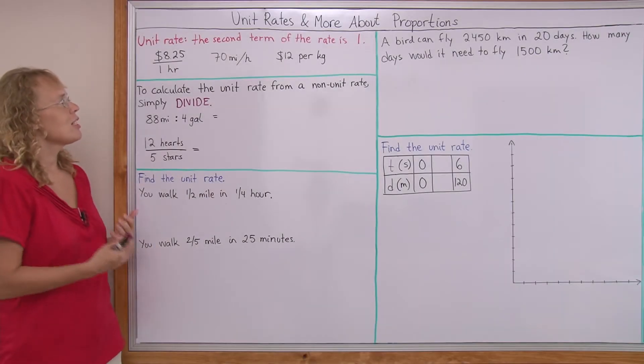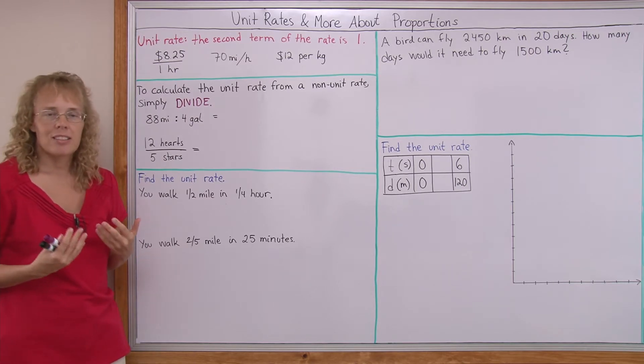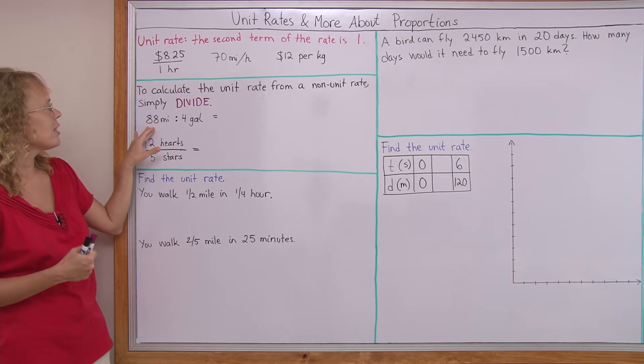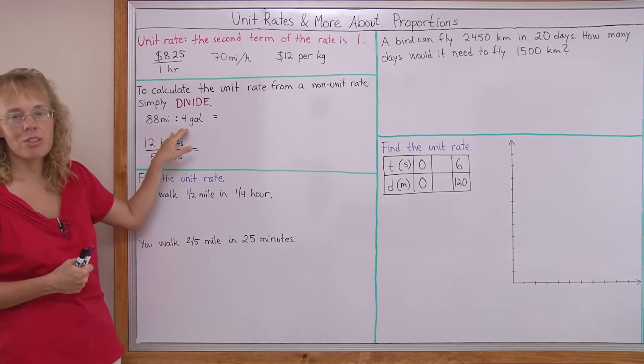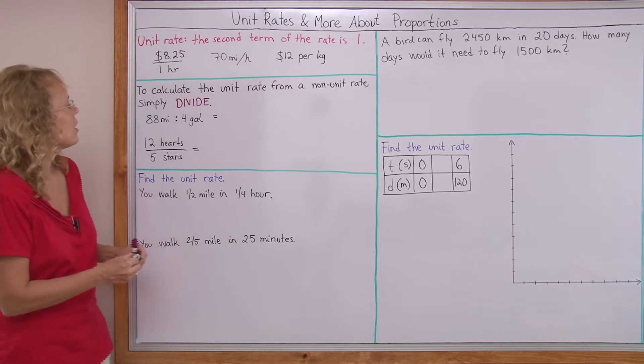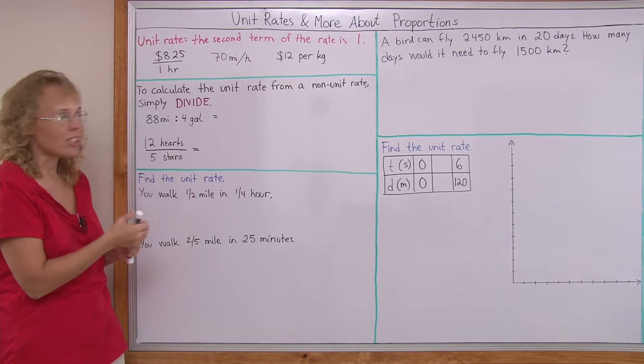Now, to calculate the unit rate from some other rate that is not a unit rate, you simply divide. For example, if you have 88 miles per 4 gallons, or 88 miles to 4 gallons.